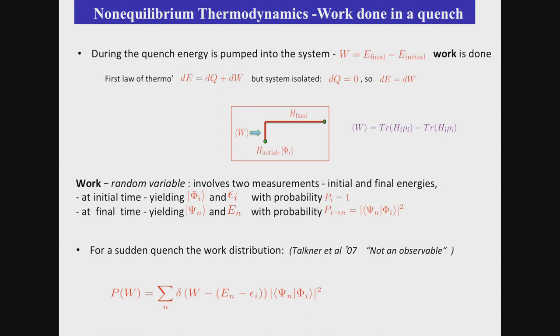In fact, as was pointed out by Hänggi et al., it's a random variable. It involves two measurements, an initial and final energy. In other words, I prepared the system initially in a state phi i, phi initial, with a given energy. So the probability then is pi is one, and then I evolve the system, and I do another measurement. I measure energy EN with probability of the overlap phi i, psi n, absolute value square, and it has energy EN. So the final energy fluctuates. I could, of course, start from also an initial distribution, let's say finite temperature, but for simplicity, I'll start with a well-defined initial state.